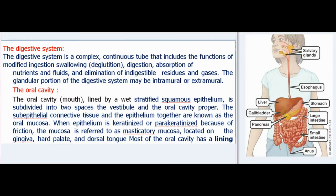The oral cavity, or mouth, is lined by a wet stratified squamous epithelium and is subdivided into two spaces: the vestibule and the oral cavity proper. The subepithelial connective tissue and the epithelium together are known as the oral mucosa. When the epithelium is keratinized or parakeratinized due to friction, the mucosa is referred to as masticatory mucosa.